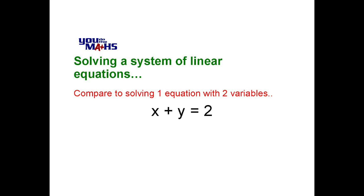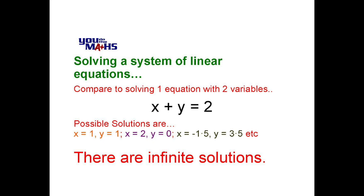Here's an equation x plus y equals 2. So it's just the one equation but with two variables. One possible solution is x equals 1 and y equals 1. Another possible solution is x equals 2 and y equals 0. Or we could even use decimals x equals negative 1.5 and y equals 3.5. In fact there are an infinite number of solutions that exist in this case.